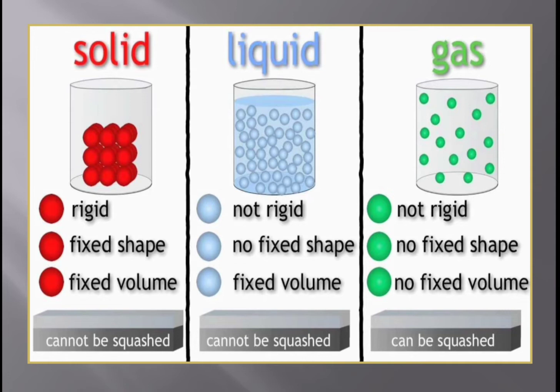Because of that, solids have fixed shape and fixed size. They cannot be compressed easily. Compress means to press so that it takes less space. But for solids, as they are already tightly packed, they don't flow either.